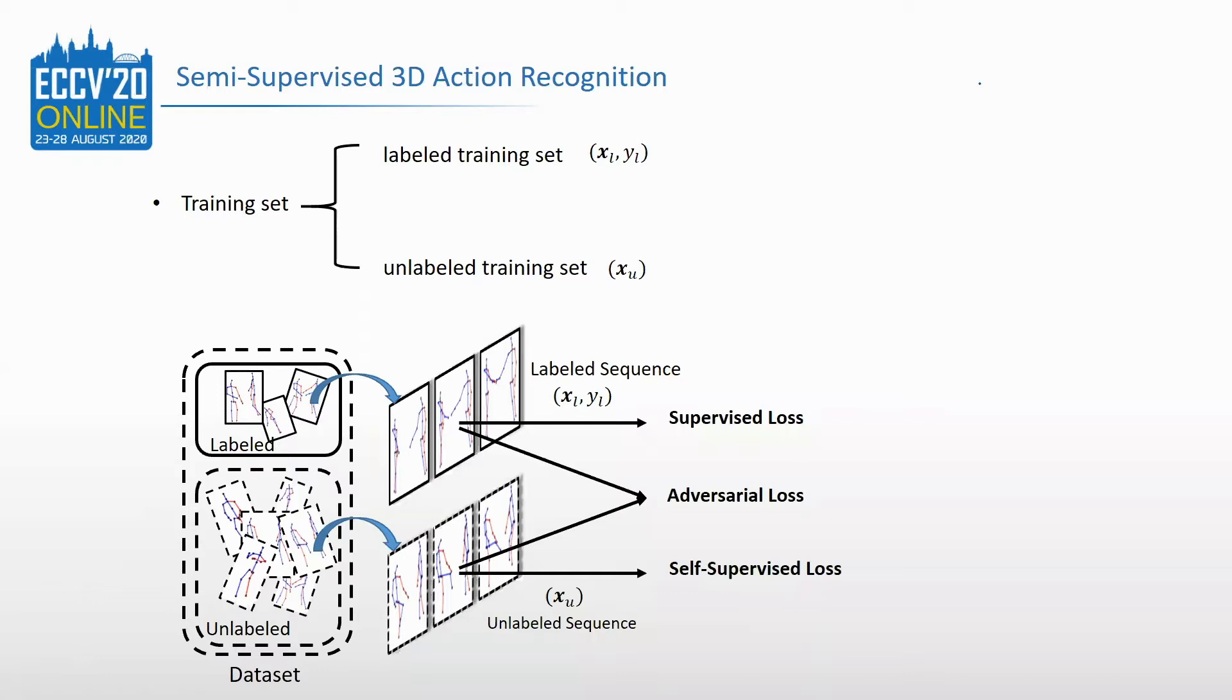Recently, self-supervised learning has performed a strong power in learning features from unlabeled data. So we combine self-supervised learning with semi-supervised 3D action recognition, and propose an adversarial self-supervised learning framework for this task.